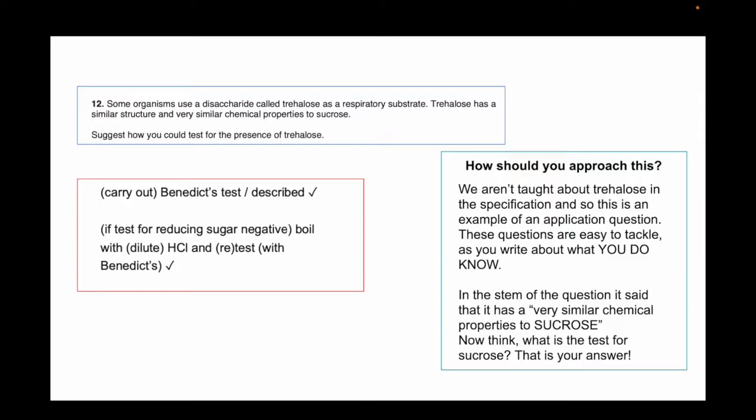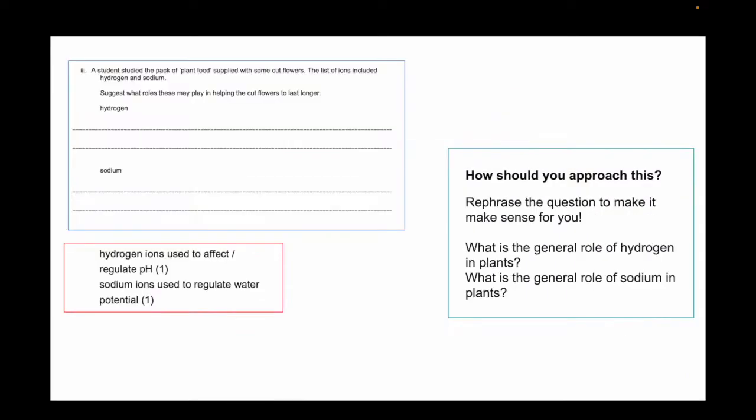That is how you're going to write the answer, because we aren't taught about it in the specification, are we? So this is an example for application question. You just write what you do know. So you know what the test for sucrose is, so that's what you're going to write. If you look at the mark scheme, it says carry out Benedict's test, and if test for reducing sugar is negative, boil with dilute hydrochloric acid and retest with Benedict's. Easy.